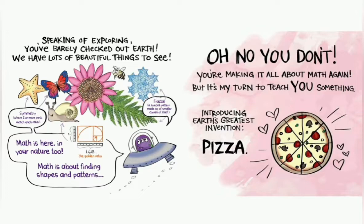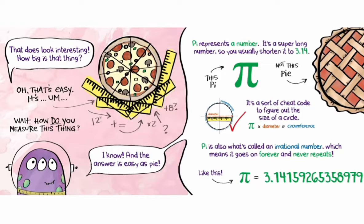Oh no you don't, you're making it all about math again. Now it's my turn to teach you something. Introducing Earth's greatest invention: pizza! That does look interesting. How big is that thing? Oh, that's easy. It's, wait, how do you measure this thing? I know, and the answer is easy as pie. Pi represents a number. It's a super long number, so you usually shorten it to 3.14. This pie, not this pie. It's a sort of cheat code to figure out the size of a circle. Pi times diameter equals circumference. Pi is also what's called an irrational number, which means it goes on forever and never repeats. Like this: 3.14159265358979...